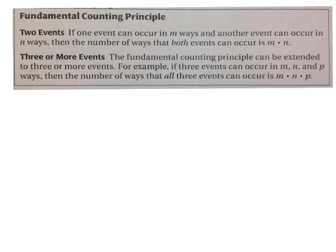And that says, if one event can occur in m ways, and another event can occur in n ways, then the number of ways that both events could occur is m times n. And if we have three or more events, it can be extended. For example, if you have three events that occur in m, n, and p ways, then the number of ways that all three could occur would be m times n times p.